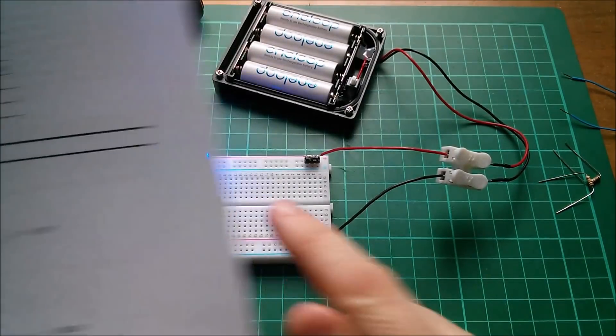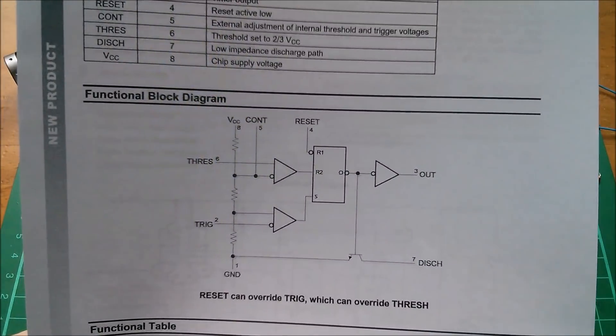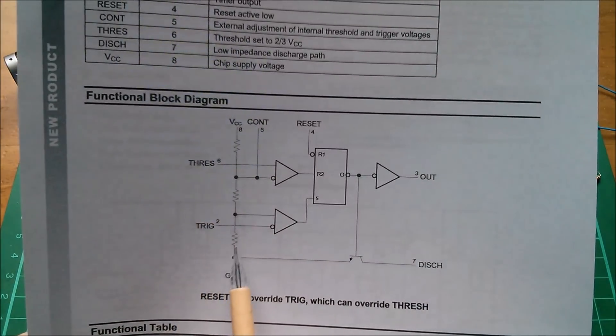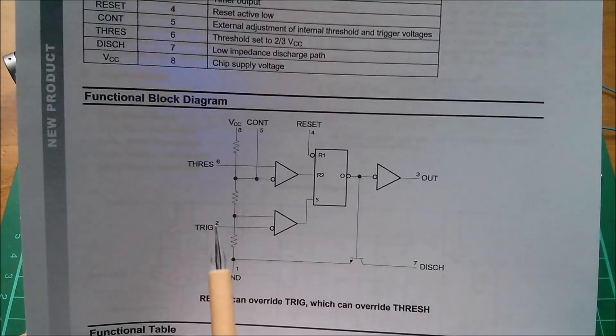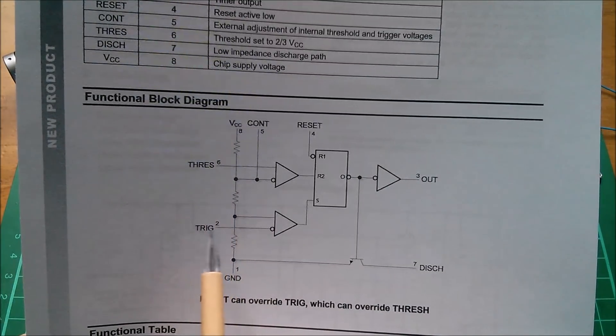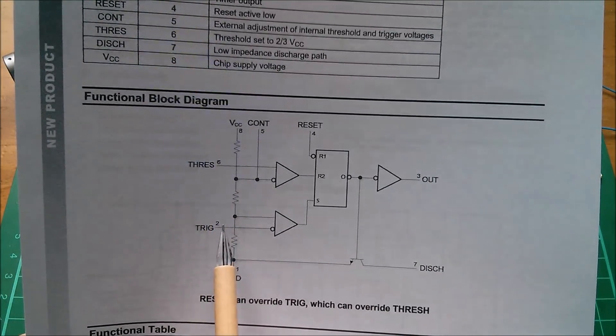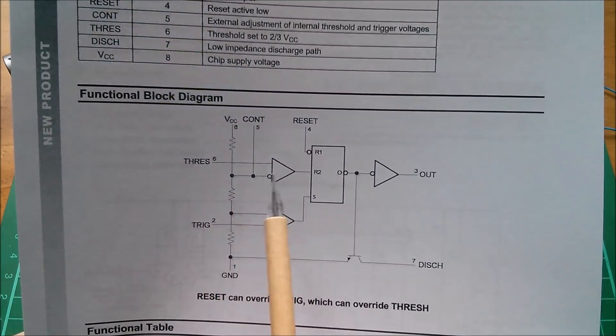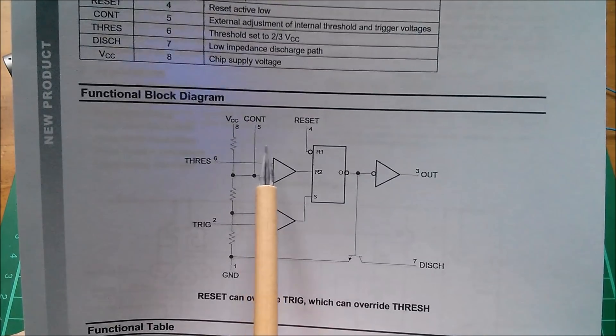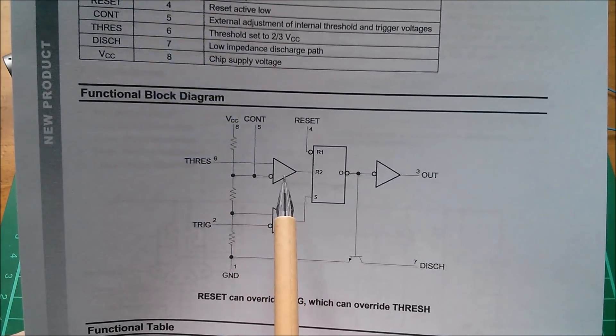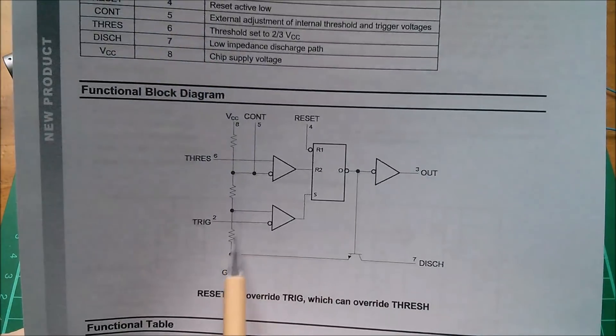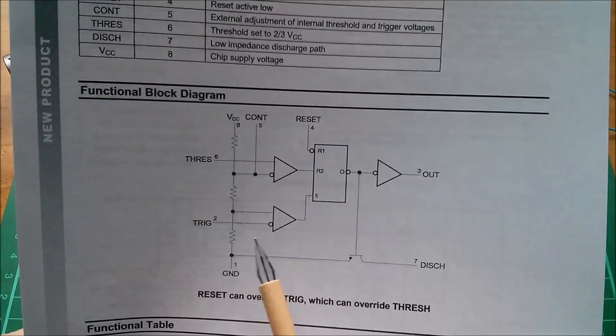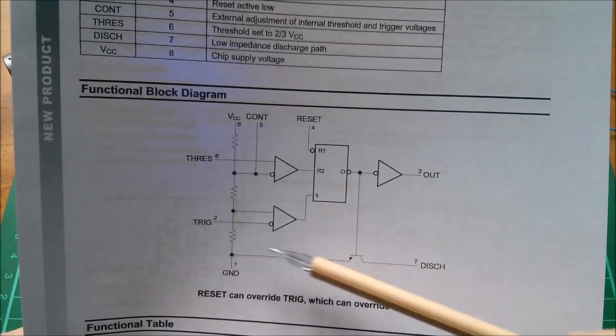Now what about slowing this flashing down? I thought, what if you pulled this point up when the capacitor is charging. The capacitor is here between threshold and trigger connected together and the capacitor goes to ground. Pull this point up when the capacitor is charging, so it takes longer for the capacitor to reach the voltage where the comparator trips. And then pull this point down when it's discharging, so the capacitor has to discharge more fully to flip this comparator.